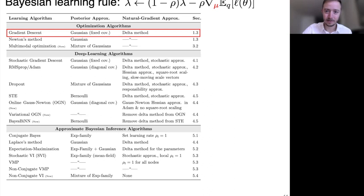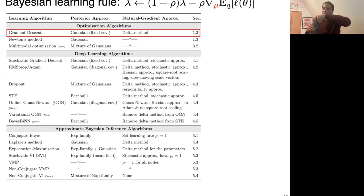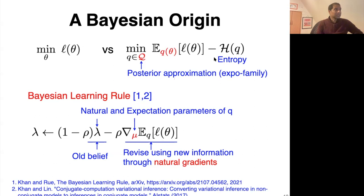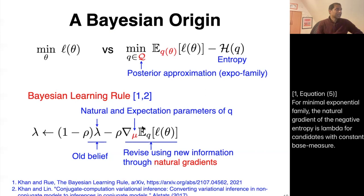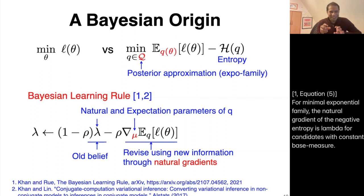Q: In the Bayesian learning rule, does the entropy term not show up? A: Actually, for a minimal exponential family, the natural gradient of entropy is lambda, so that term actually corresponds to entropy. You get a moving average where the two things are at the same level — a convex sum. So you can call this innovation — new information coming in — and this is the old belief. If it's gradient descent style you can't say the same thing. Entropy plays a very important role in doing this kind of exploration.